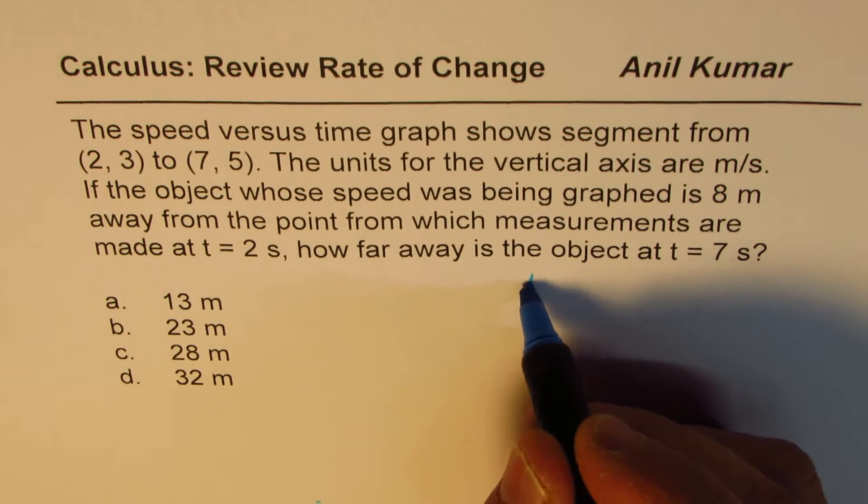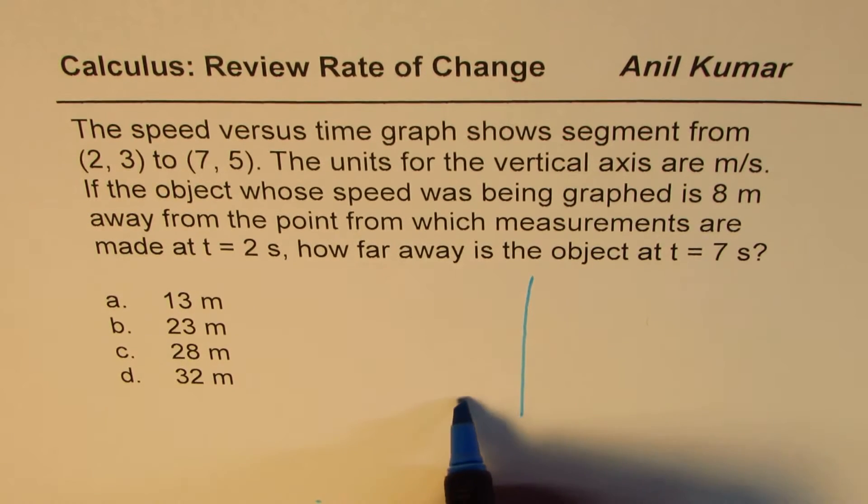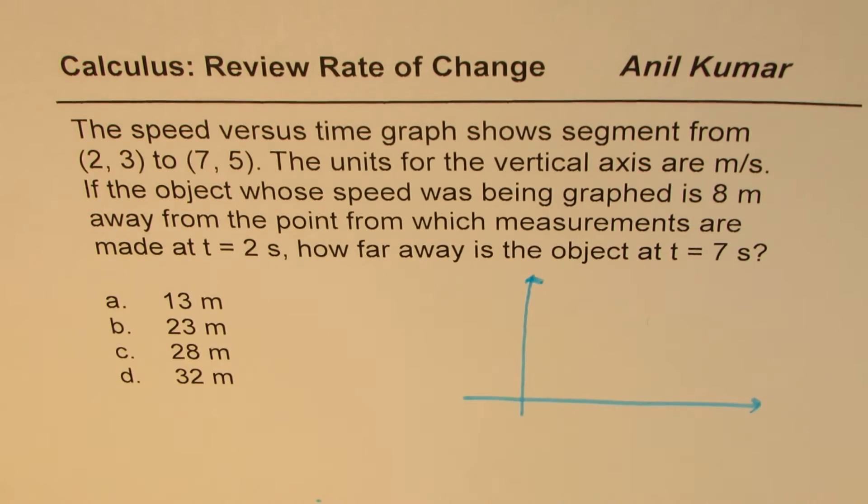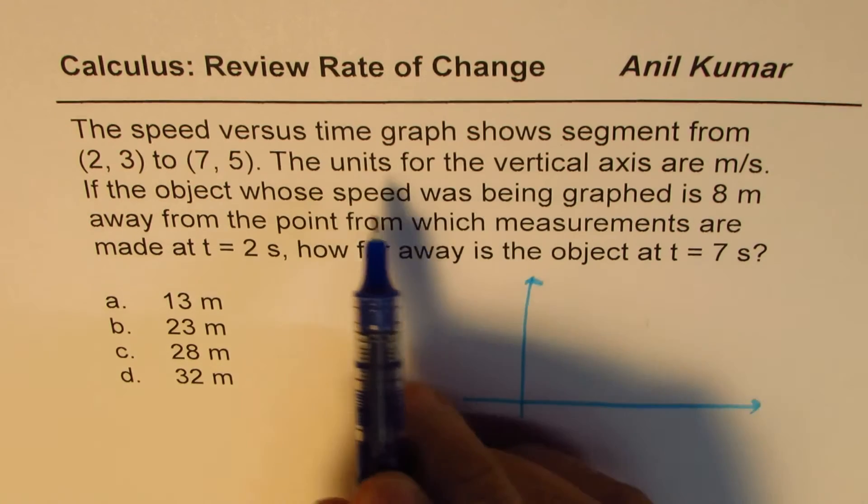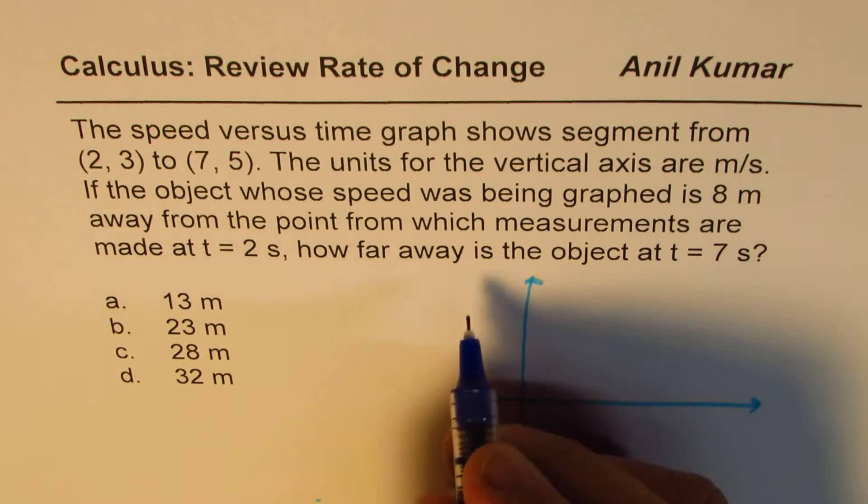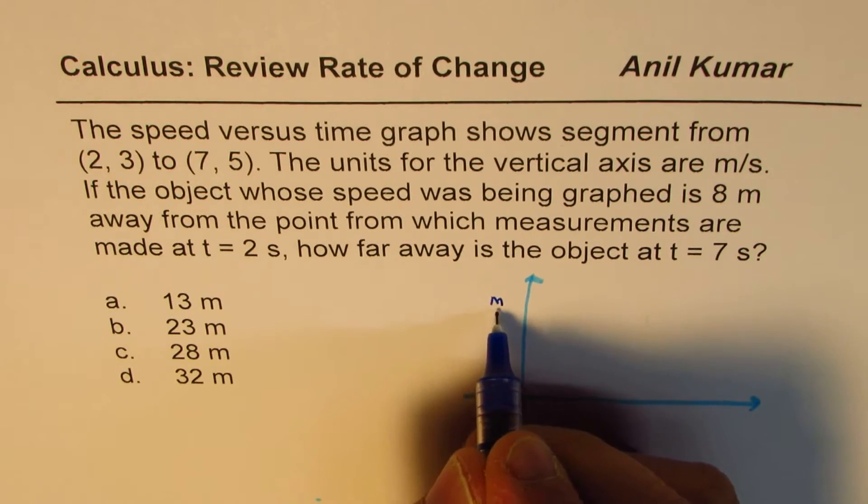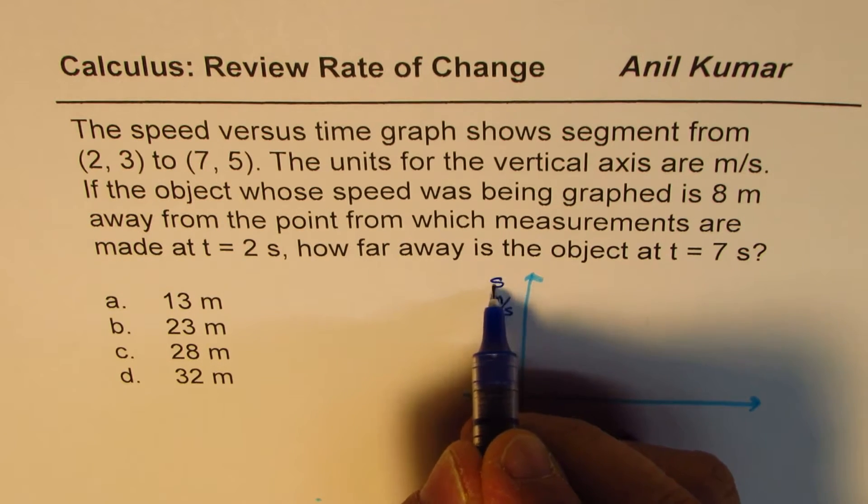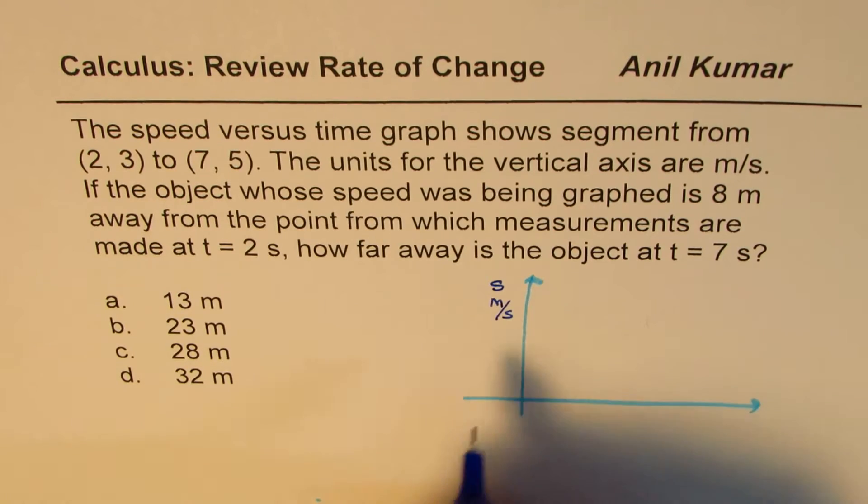In such questions, it may be of an advantage to sketch the scenario. So let us sketch the information in the form of a graph. We have speed versus time graph. Speed is on one axis, and since we are given units of vertical axis meters per second, this is speed. This is time in seconds.